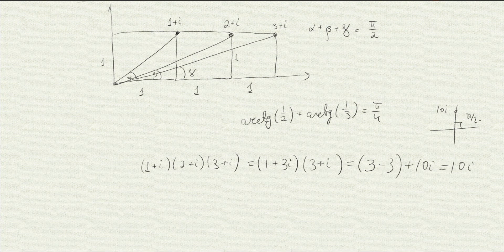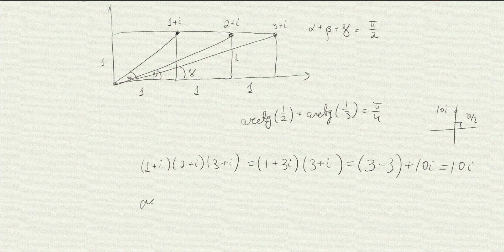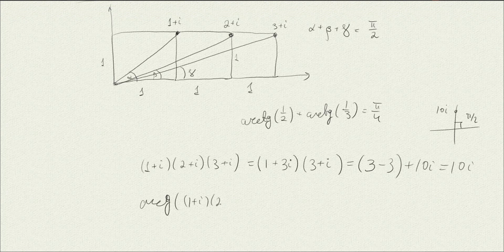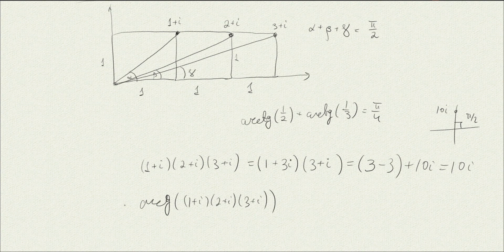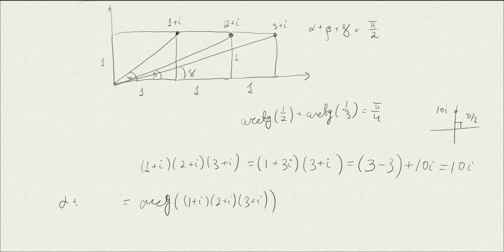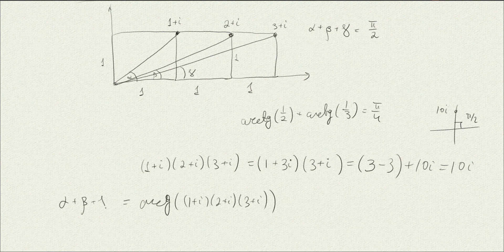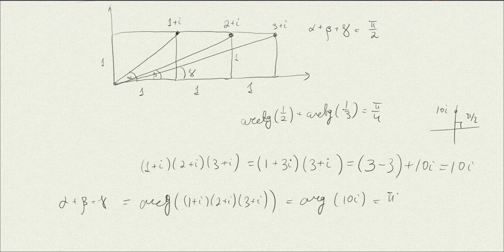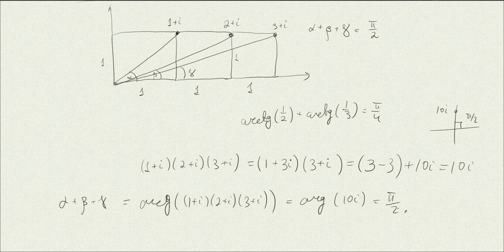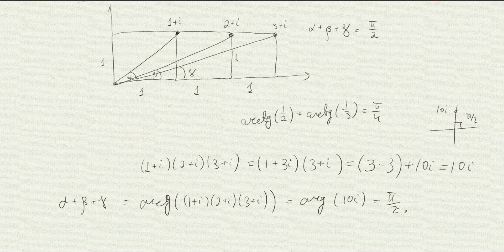Therefore, the argument of 1 plus i times 2 plus i times 3 plus i equals to alpha plus beta plus gamma, but it's also equal to the argument of 10i, which is pi half, and therefore, this problem is solved, and this is proved.